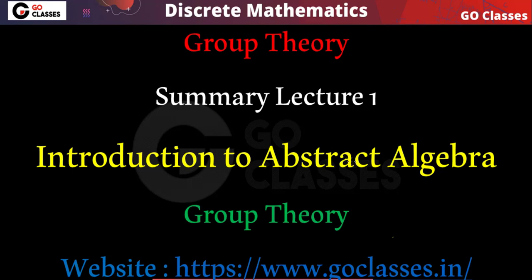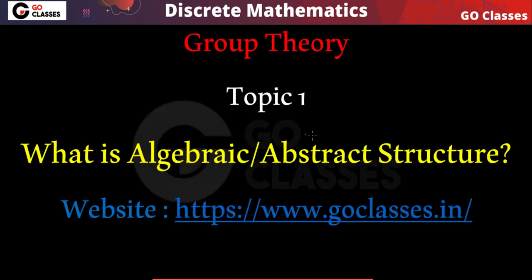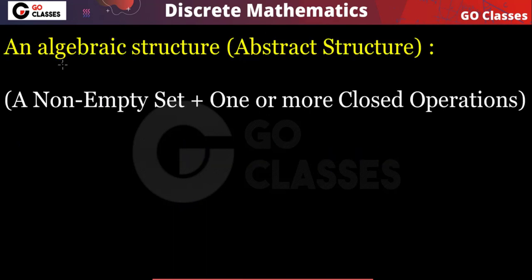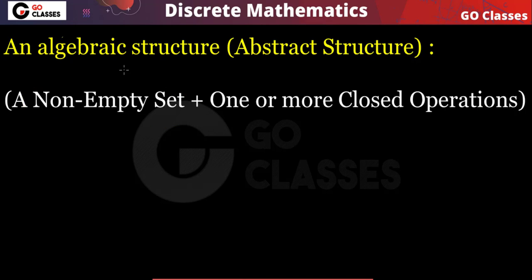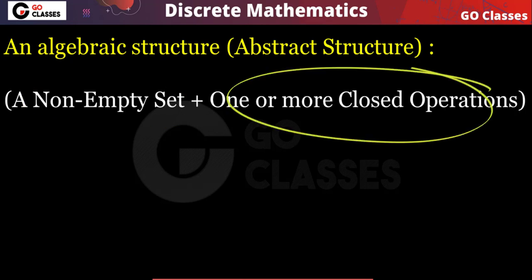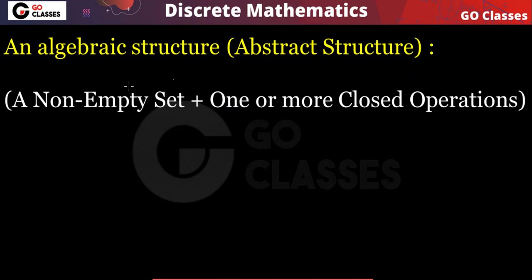Hi, these are the summary lectures of group theory. In this lecture we will study what is abstract algebra. Before that, we need to see what is an algebraic structure. The definition of algebraic structure is basically a non-empty set and one or more closed operations defined on that set. This pair is called an algebraic structure.